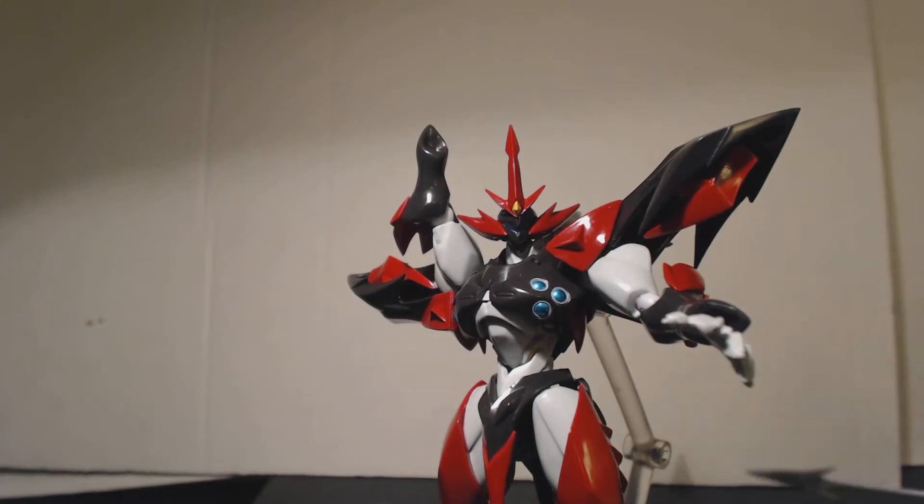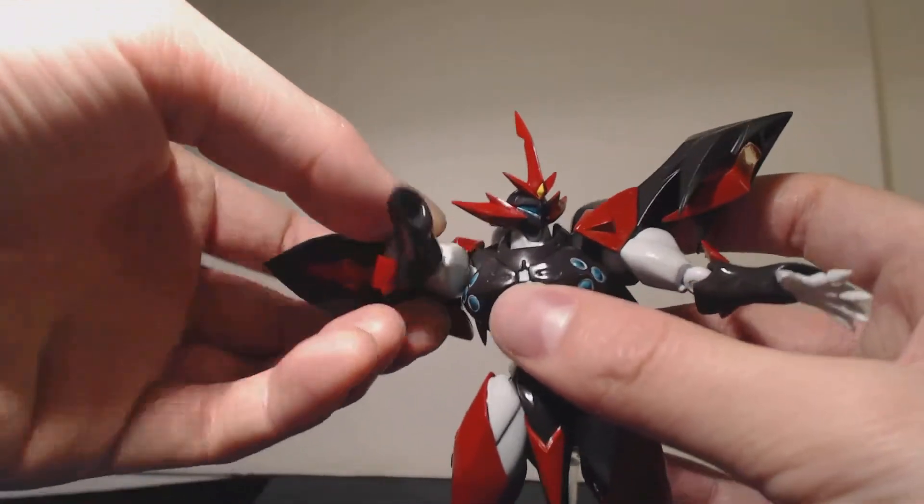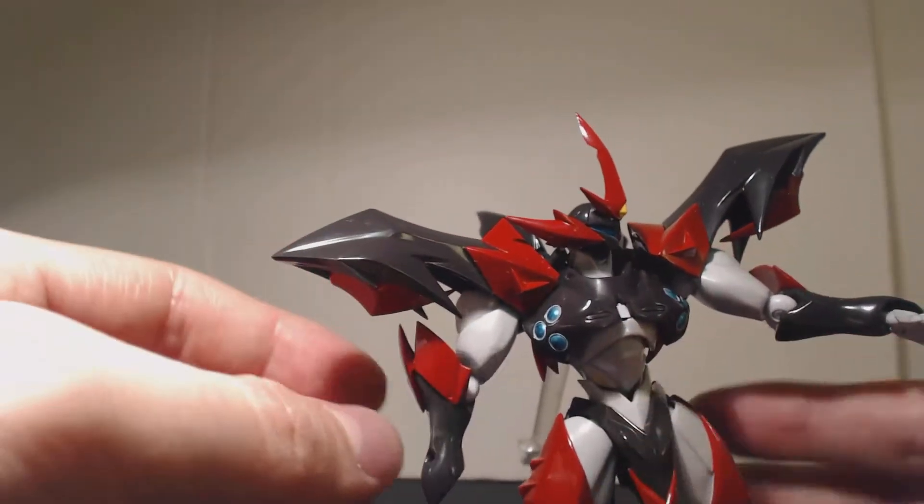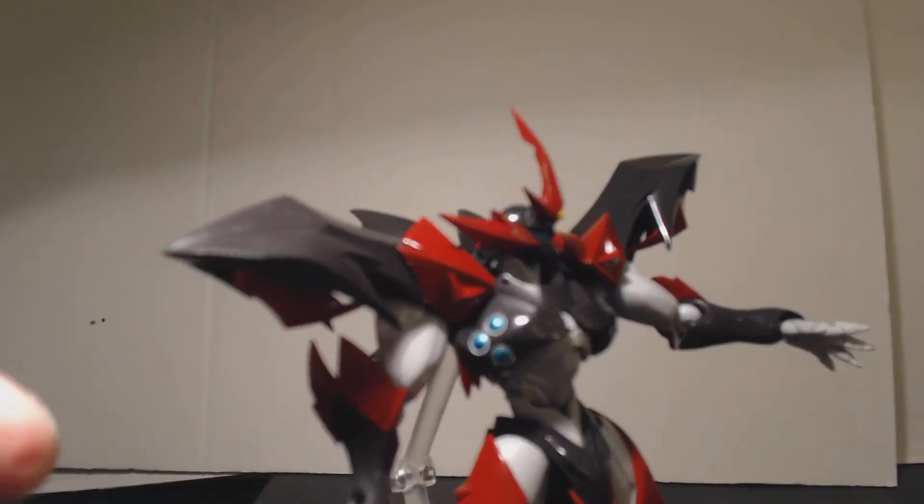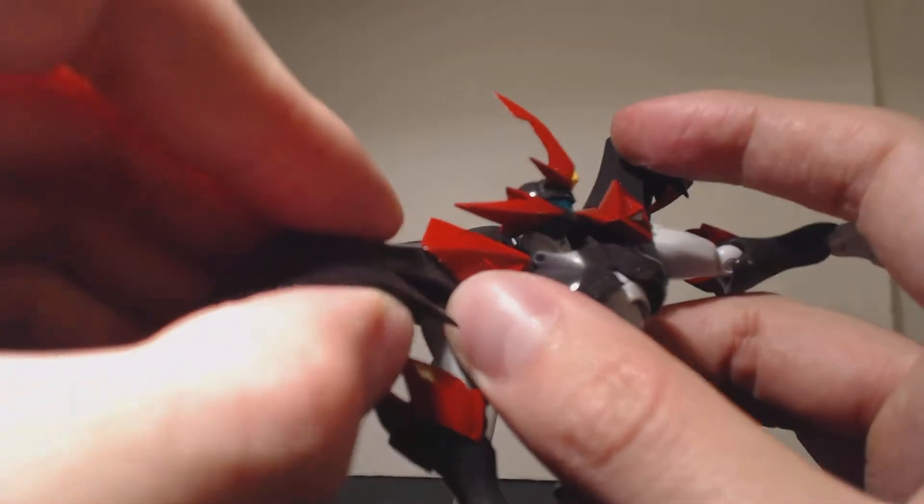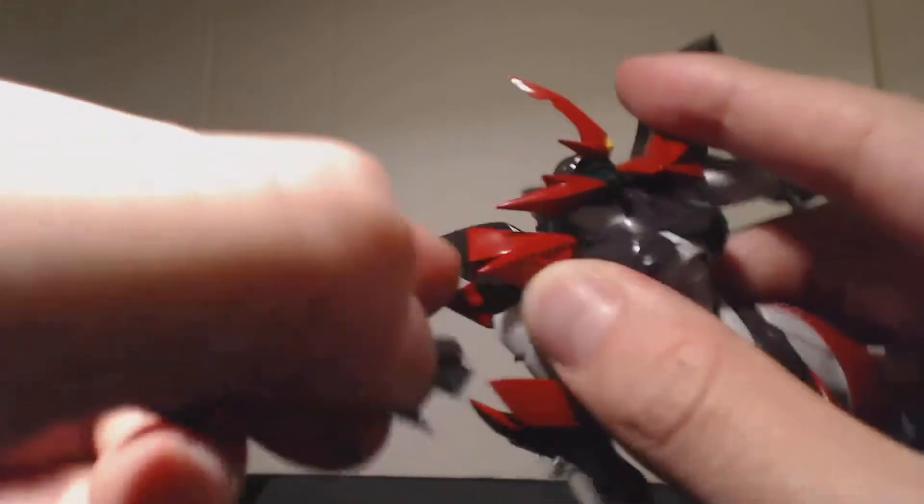Okay, so moving along here, I promised I was going to show you guys the shoulder blade, so I'm going to show you how that's done. So this is Tekkaman Evil, and the armor here can actually pull off. Watch how it's done. Here you go, it just comes off.